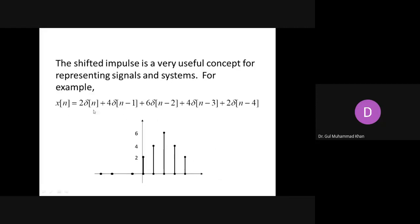Let's look at how any discrete time signal generally looks. When we perform sampling, we end up with different samples stored inside the computer. But how do we represent them mathematically? Because we have to write programs and mathematical expressions — unless you have a mathematical representation of a signal, you can't say much just by looking at the graph. These samples are written like: x of n equals 2, 4 delta of n minus 1, depending on the location of the sample. Delta represents whether the value is at 0, 1, 2, 3, 4, and so on.